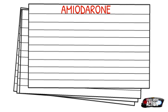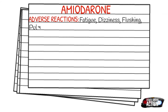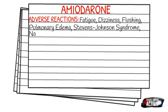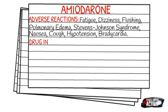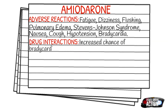Some adverse reactions of amiodarone include fatigue, dizziness, flushing, pulmonary edema, Stevens-Johnson syndrome, nausea, cough, hypotension, and bradycardia. Regarding drug interactions, there is an increased chance of bradycardia, hypotension, AV blocks, and sinus arrest when amiodarone is given with other beta blockers or calcium channel blockers.